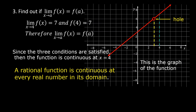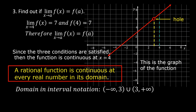This is the domain of the function in interval notation: negative infinity to 3, union 3 to positive infinity. We use a parenthesis after 3 here and another parenthesis before 3 here because 3 is not included in the domain. For negative infinity and positive infinity, we always use parenthesis.